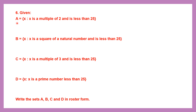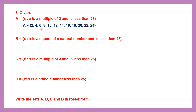Question 6 — given sets A, B, C, D, write them in the roster form. We've been given the set builder notation and must write the actual elements. Set A: x is a multiple of 2 and less than 25. All multiples of 2 less than 25 are: 2, 4, 6, 8, 10, 12, 14, 16, 18, 20, 22, 24.